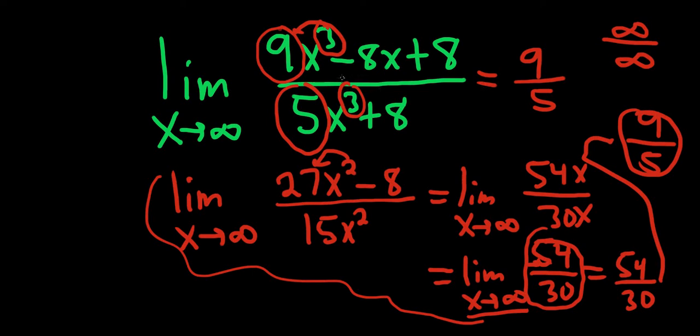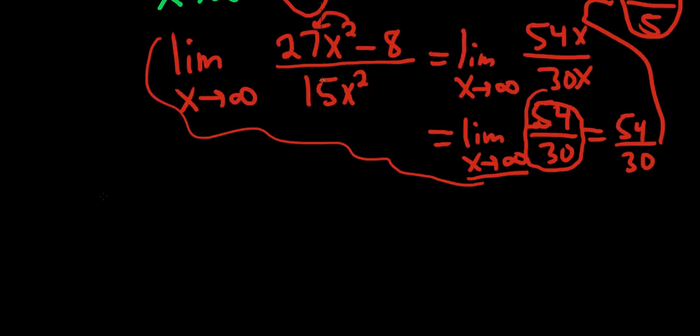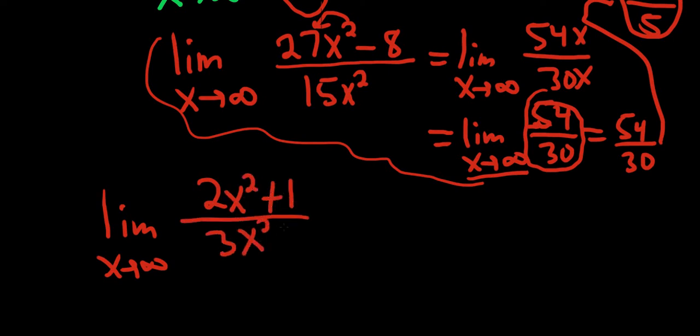And again, you can always do that when they match. Just to make the point, let's say you had limit x goes to infinity of 2x squared plus 1 over 3x squared plus 1. So if they're both the same, then you just do 2 over 3 in this case. So 2 over 3. And that's it.